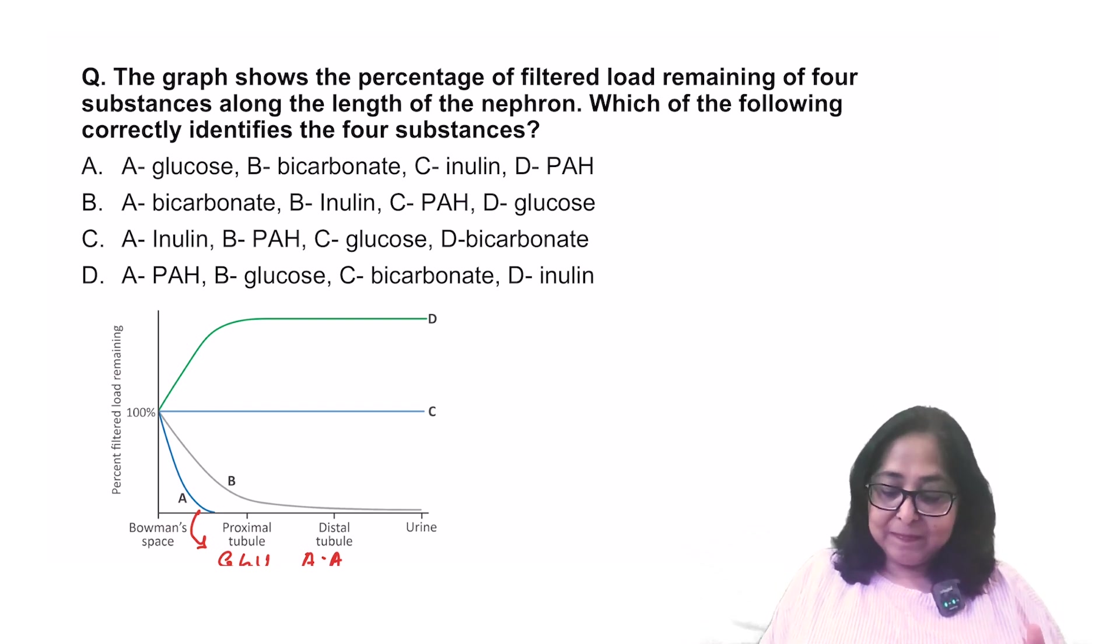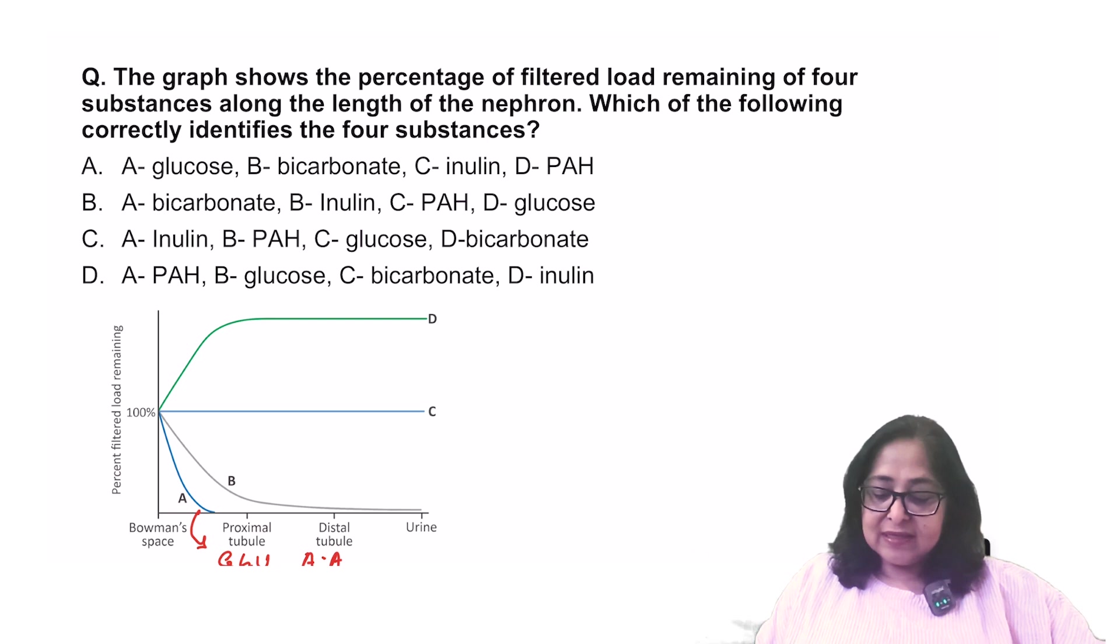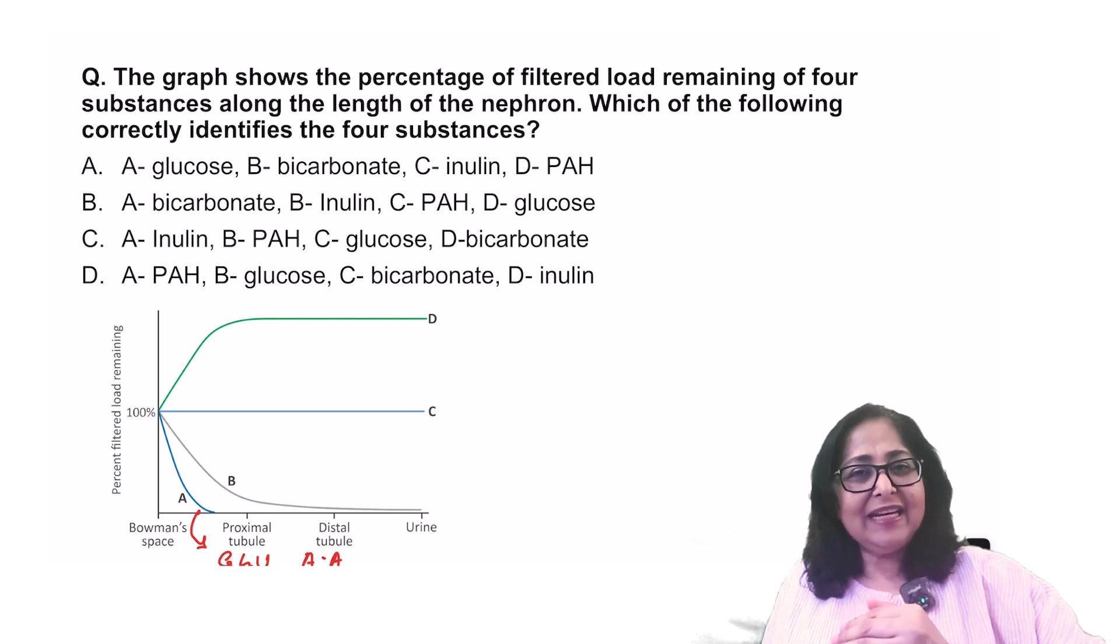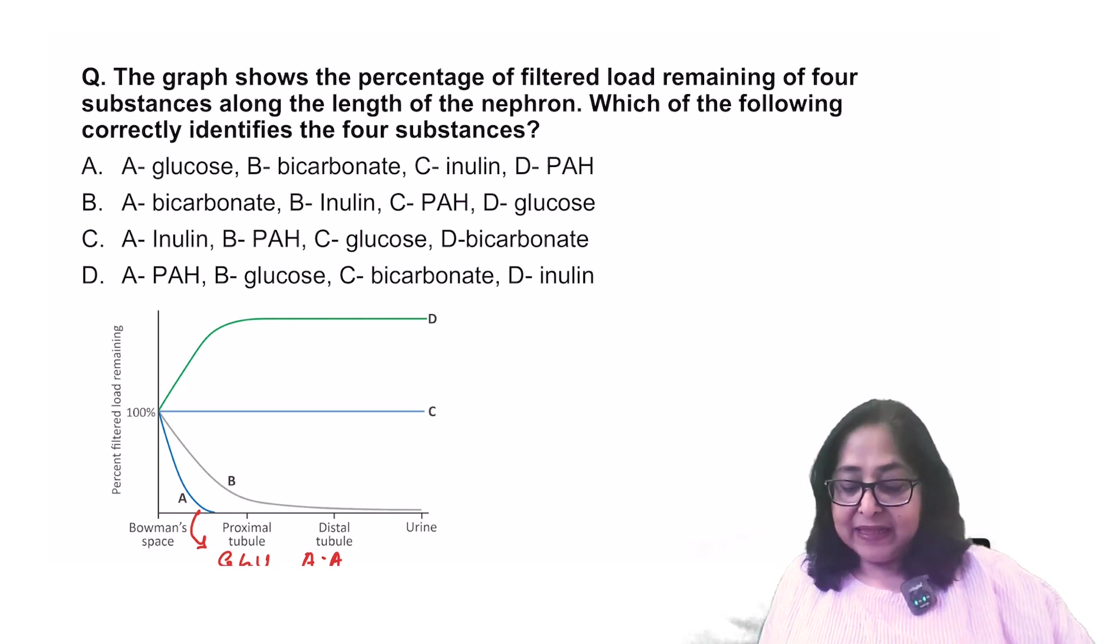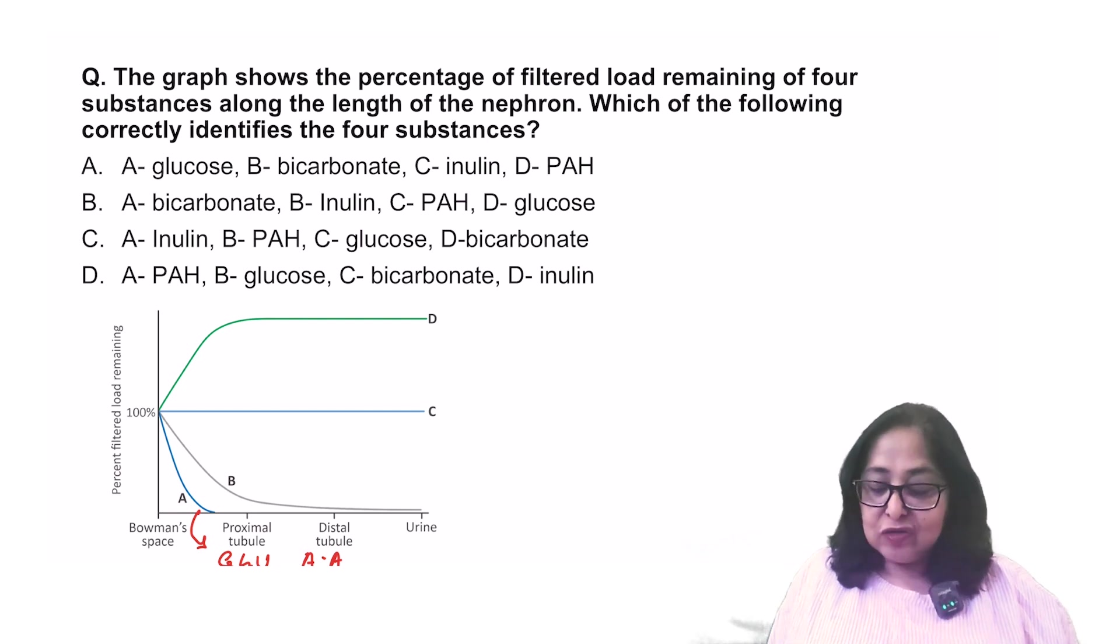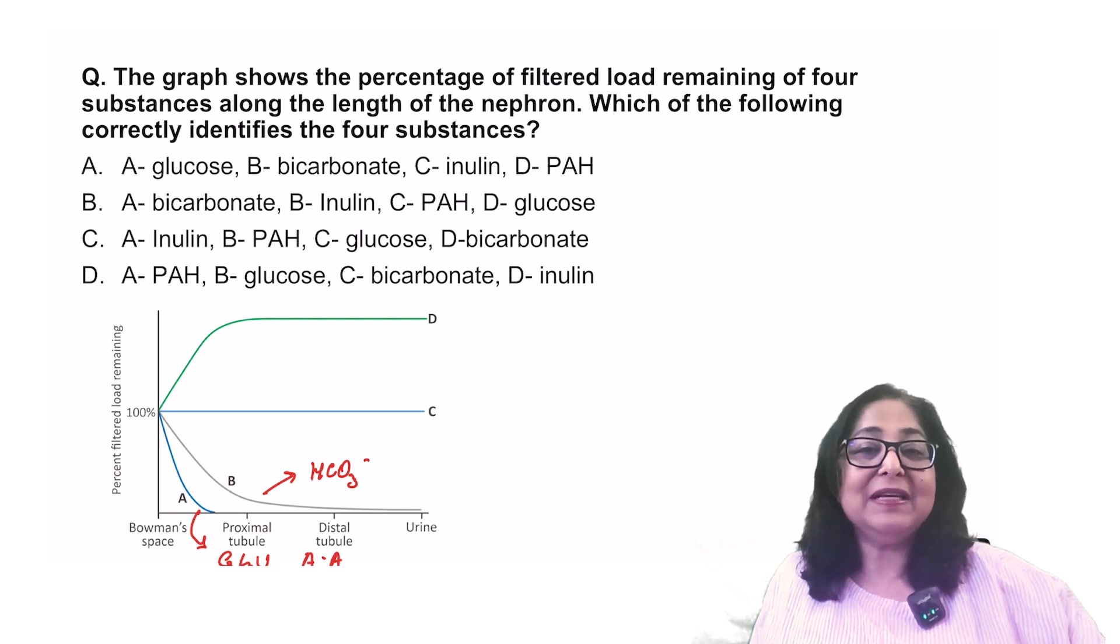Now, look at substance B. Substance B is also a freely filtered substance, so 100% of the filtrate. But by the time it crosses the PCT and comes towards a distal tubule, more than 80 to 90% of the substance is reabsorbed. And by the end of the tubule, by the end of the nephron, almost 100% is reabsorbed. So this is probably bicarbonate. 80% of the bicarbonate is reabsorbed in the PCT itself.